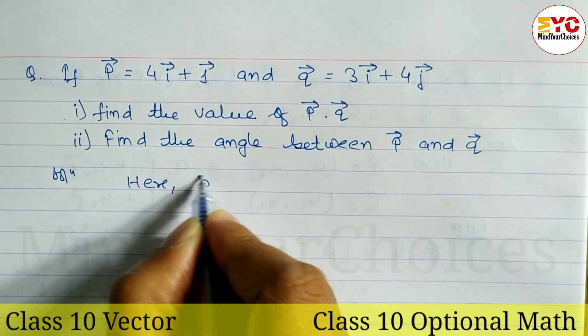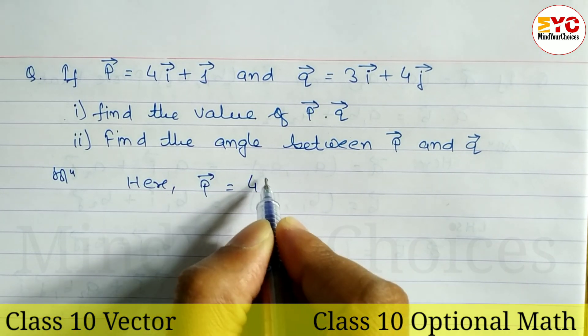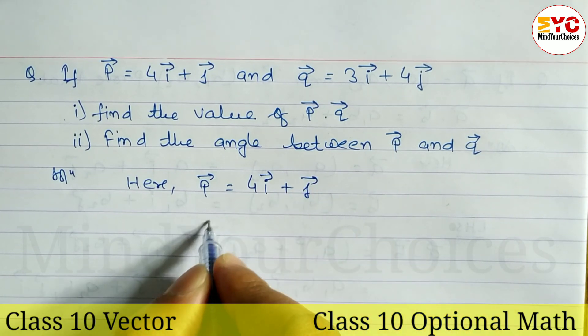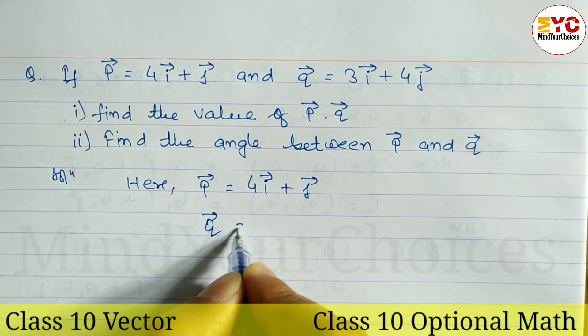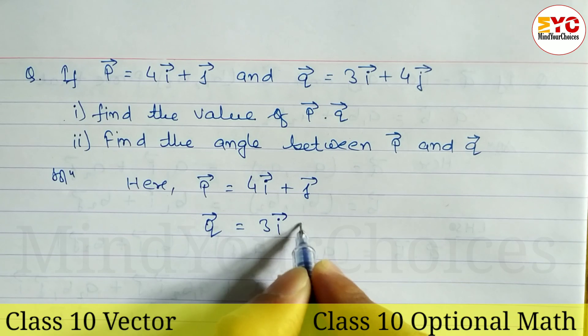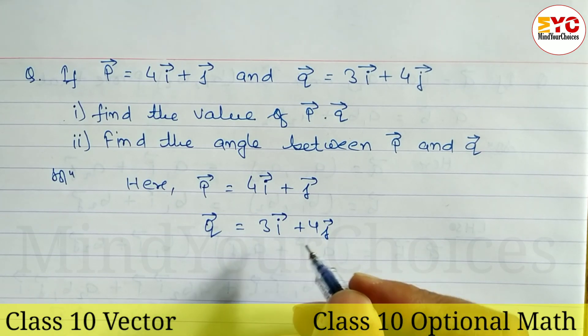The value of P is equal to 4i plus j, and Q is equal to 3i plus 4j. Write down in the form of coordinates.